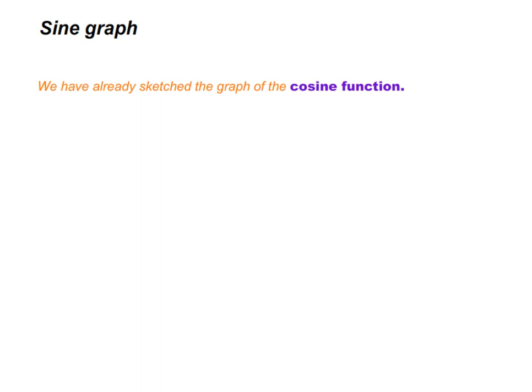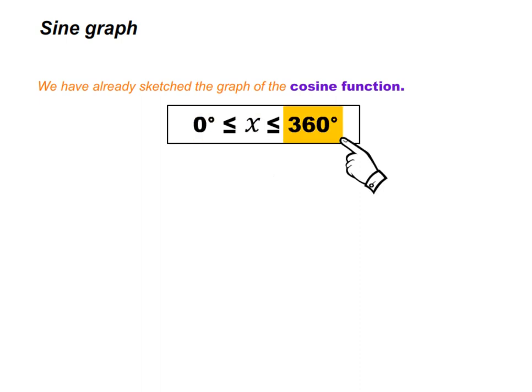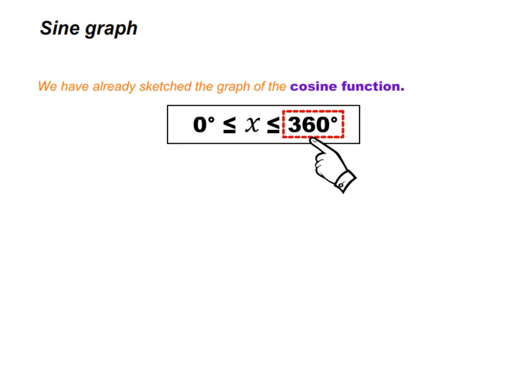Before we do that, look at this interval. When this interval is used in the graph, it tells us that we have to use the x values from 0 degrees to 360 degrees. This 0 degrees is where we start, and 360 degrees is our end point. Notice that the smallest x value is on the left and the largest x value is on the right.